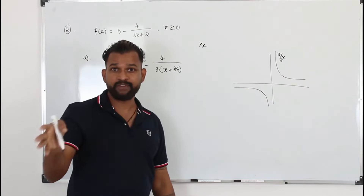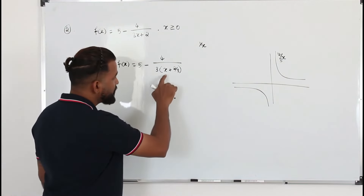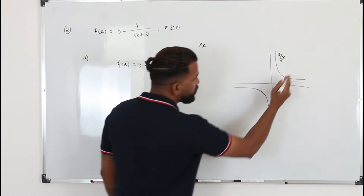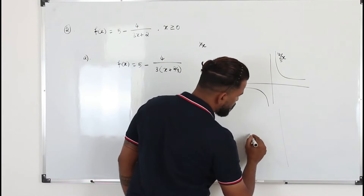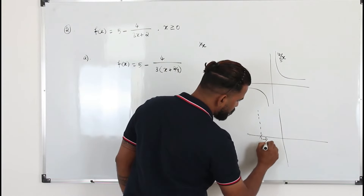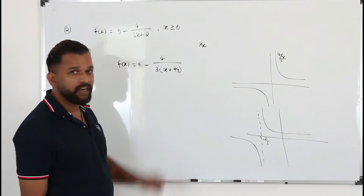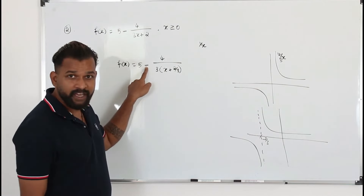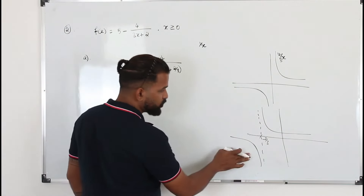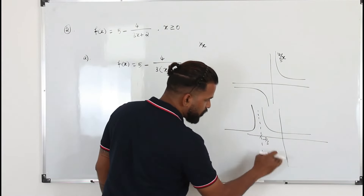We learned this in P1 Chapter 4, Graphs and Transformations. If you replace x by x plus 2 over 3 in the graph of 4 over 3x, it's a translation to the left by 2 over 3 units. So you move the graph 2 over 3 units left, giving a vertical asymptote at minus 2 over 3. Then there's a minus sign in front, which is a reflection over the x-axis — so this part goes up and this part goes down.